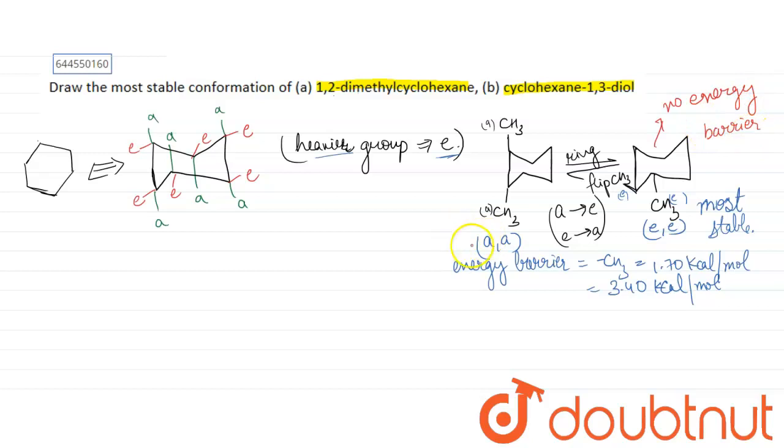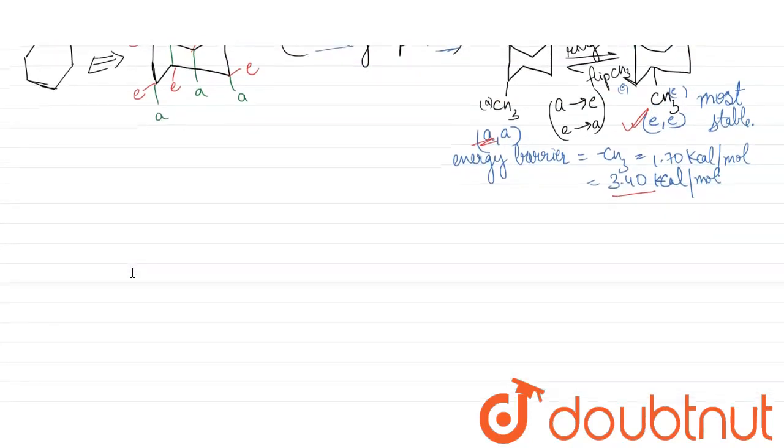But here we have energy barrier of 3.40 kilocalorie, therefore equatorial-equatorial is more stable. Now coming to the second part, cyclohexane-1,3-diol.